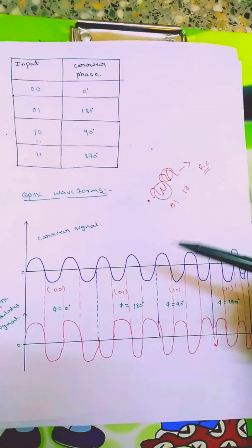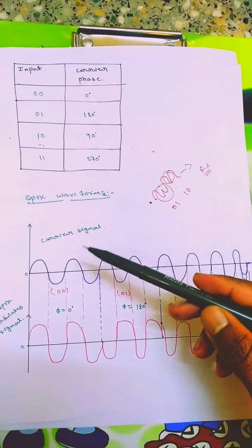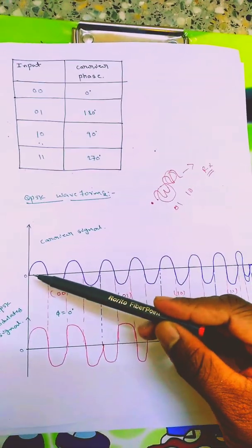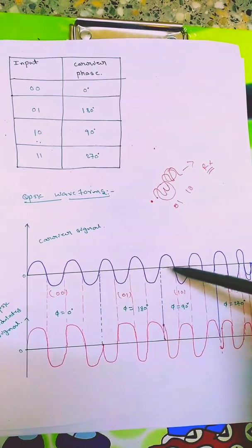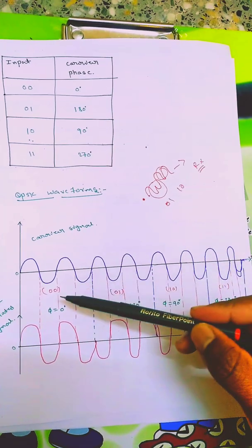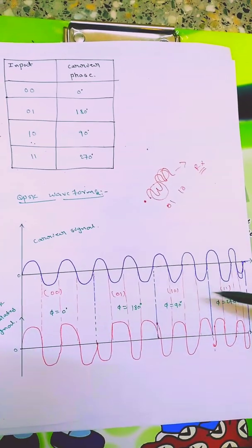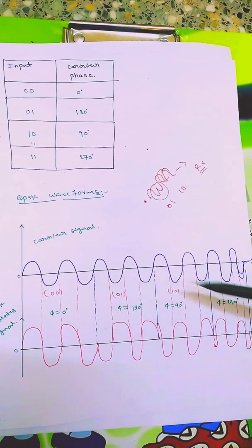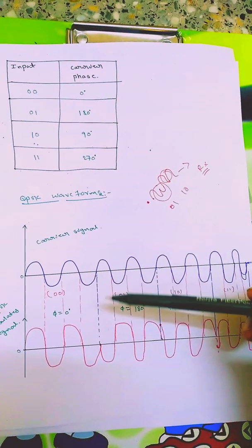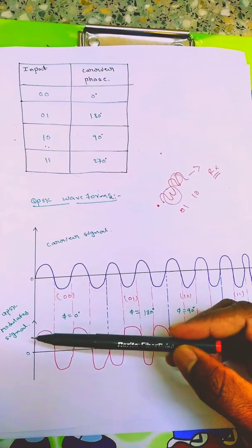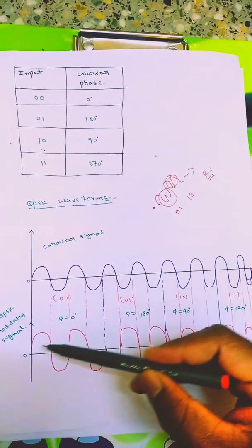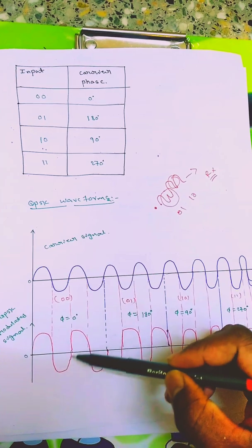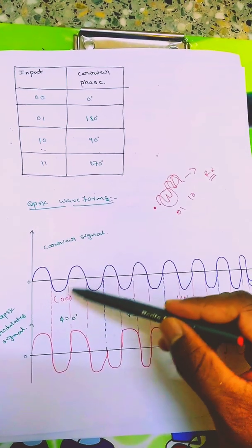Now coming to waveform. Suppose this is a carrier signal: one cycle, two cycles, one cycle, two cycles. Like this I've drawn for 00, 01, 10, 11. Suppose this is the data stream we're adding to the carrier signal. Then how will the output QPSK modulated signal be? For 00 there is 0 degree phase shift, so I won't change anything, just draw two cycles.